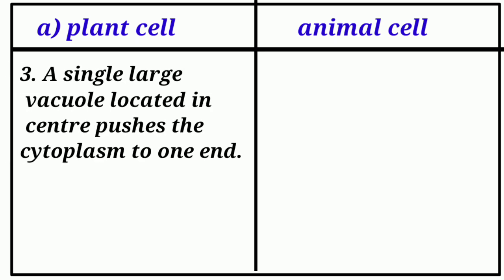The cytoplasm of the animal cells is more granular and dense. A single large vacuole located in the center pushes the cytoplasm to one end.